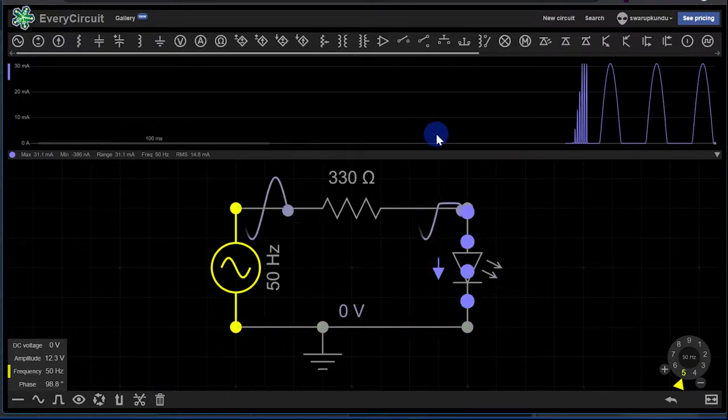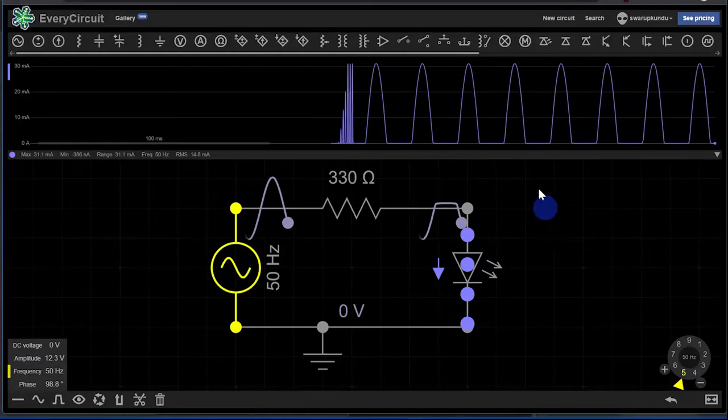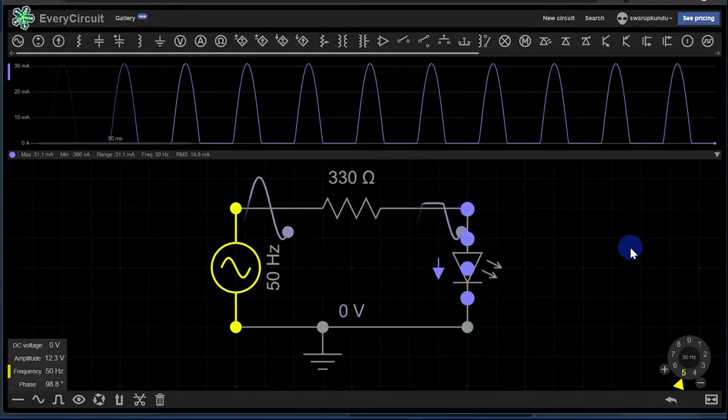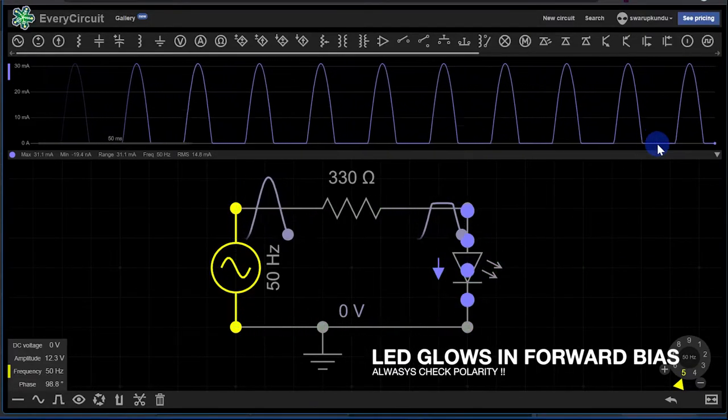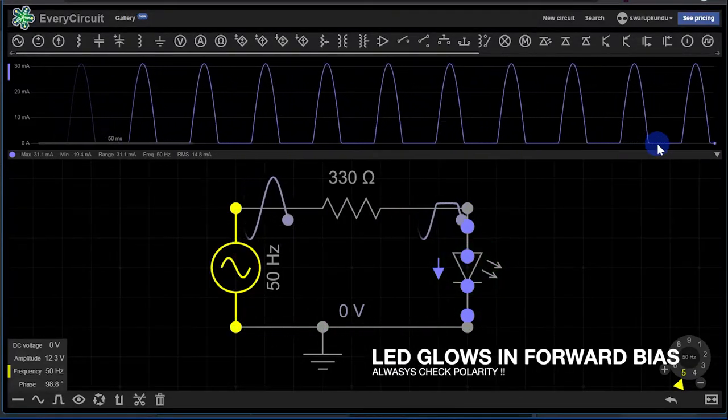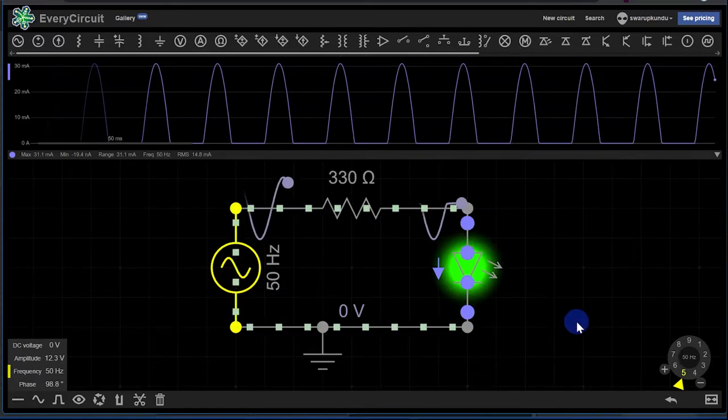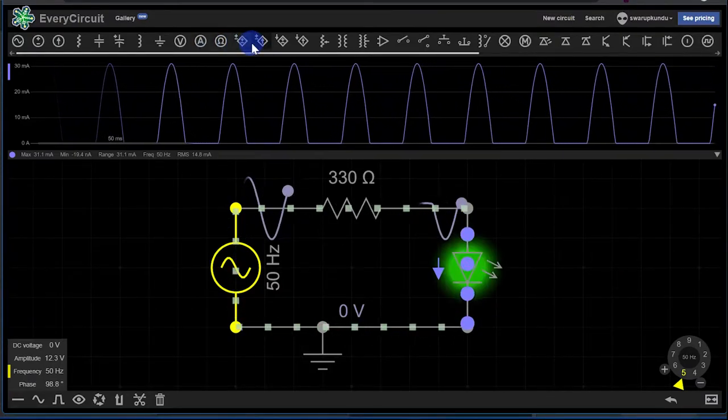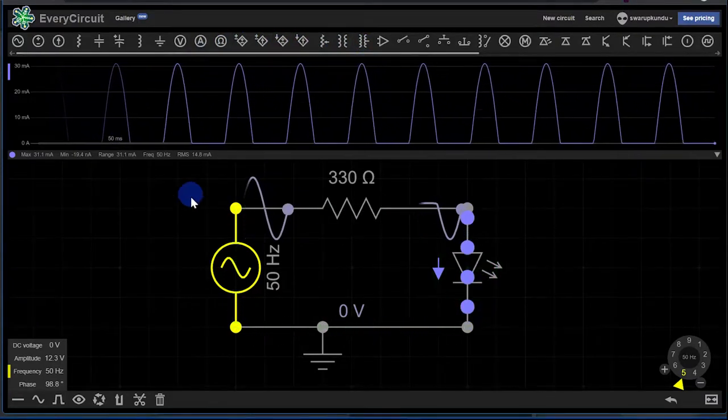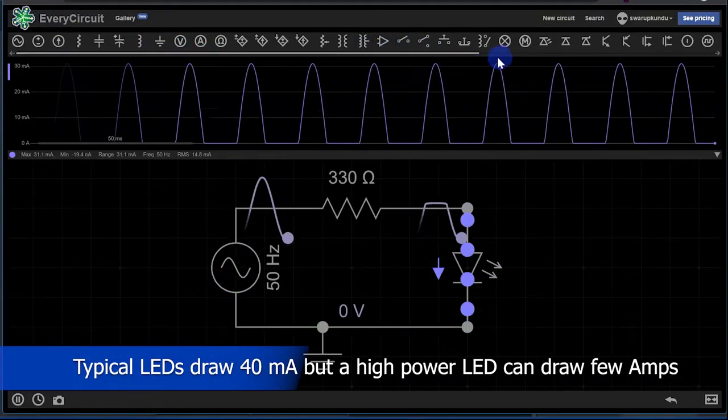We need to change the time scale because we are simulating it. You can see that LED is going on and off because it conducts only in the positive half. It's conducting at 50 Hertz, and you can see the current there. It's maximum around 30 milliamps or so.